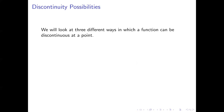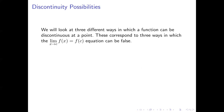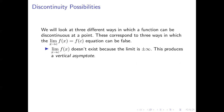There are a few different possibilities for discontinuity, and we're going to look at three of them. These correspond to three different ways in which our defining equation for continuity can be false. One possibility is that the limit doesn't exist because it's either positive or negative infinity, which gives us a vertical asymptote — something we already know about.